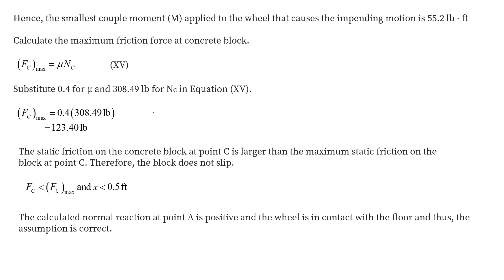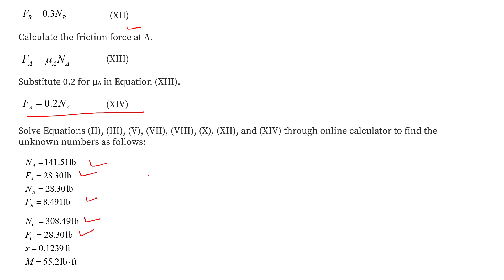Now we will check whether, due to this couple moment, the block is sliding towards the left. The normal reaction at point C is 308.49 lb and the coefficient of static friction at point C is 0.40. The maximum friction force that can be applied comes out to be 123.40 lb, which is much greater than our calculated friction force of 28.30 lb. Therefore the condition is satisfied, and the couple moment required to impend the motion of the wheel in the upward direction is 55.21 lb·ft.